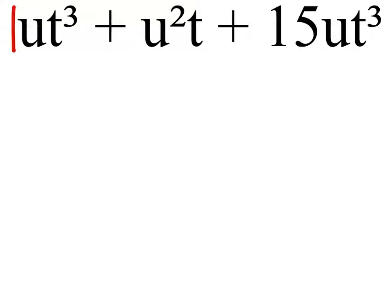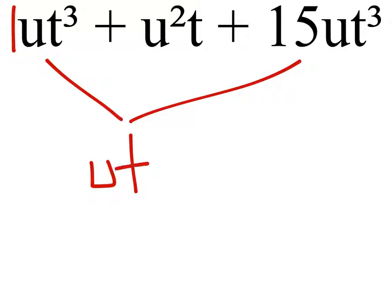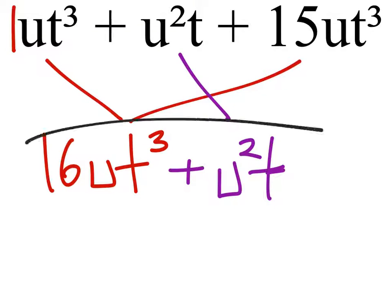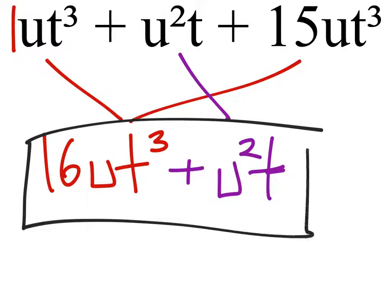So when we combine both of these, the term will still be ut cubed, but now we have 1 plus 15, which is 16. And then we carry down this u squared t. That's as much as we can simplify this one. We're not looking to factor this, so that's it.